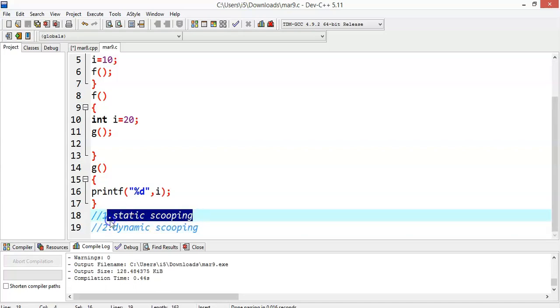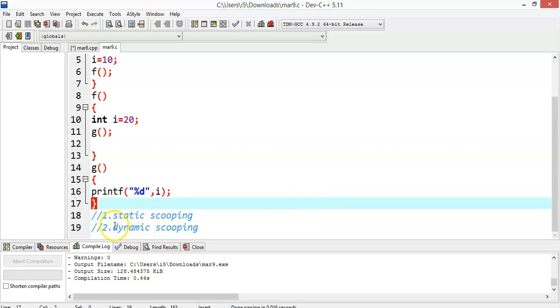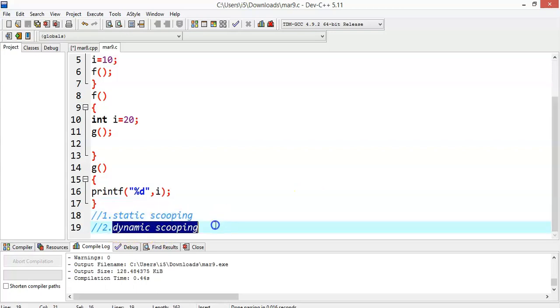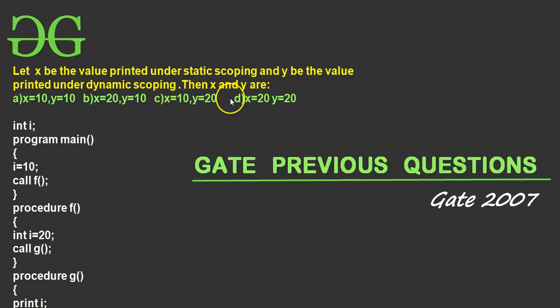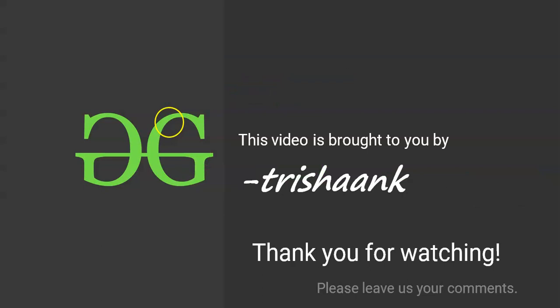Generally if you compile the code the output would be 10, but in languages that follow dynamic scoping the output would be 20. So x equals 10 under static scoping and y equals 20 under dynamic scoping. The correct answer is option C: x equal to 10 and y equal to 20. Hope you understand — thank you for watching this presentation, see you in the next session.